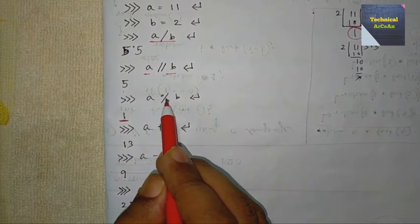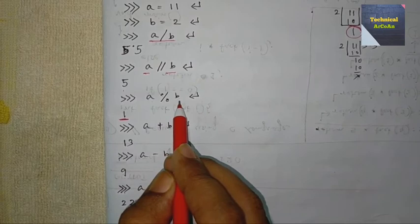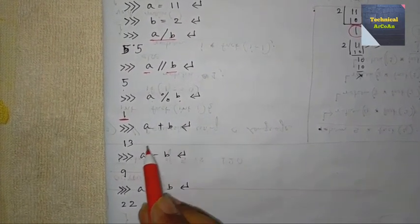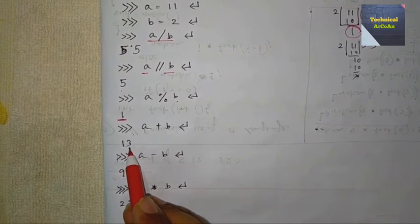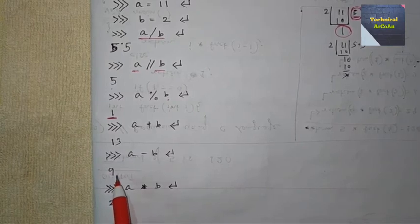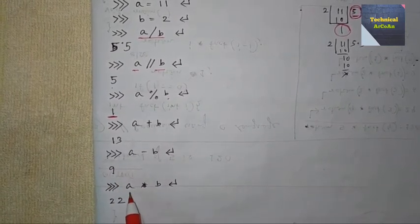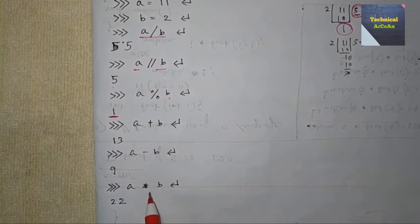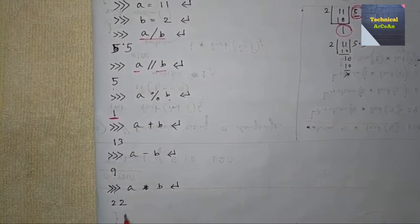After that, we do addition: a + b. When we press enter we get 13, because 11 + 2 = 13. When we use subtraction, 11 - 2 = 9, so the result is 9. When we do multiplication, we get 11 × 2 = 22.